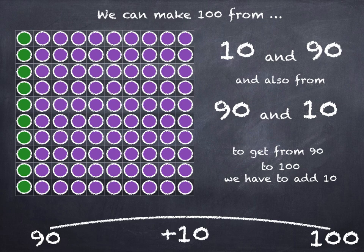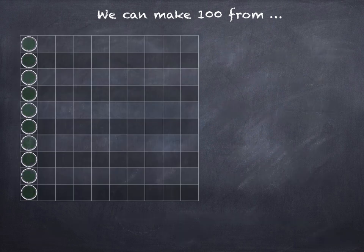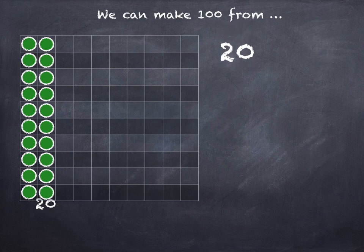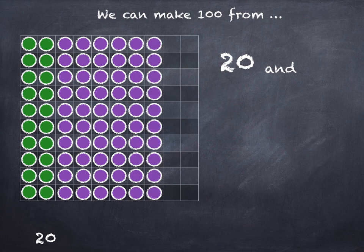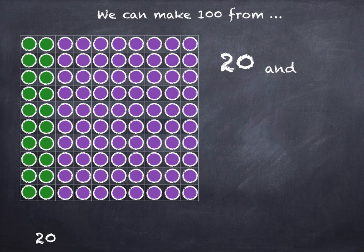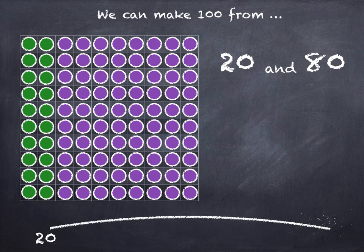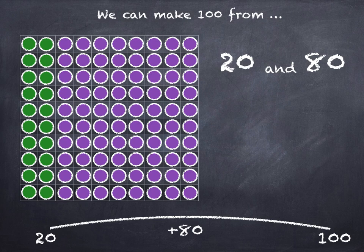We can make 100 from 20 and 80. 20 plus 80 is 100.